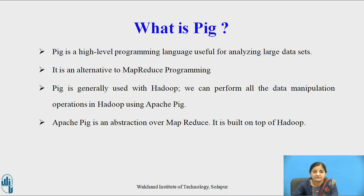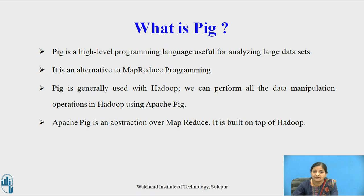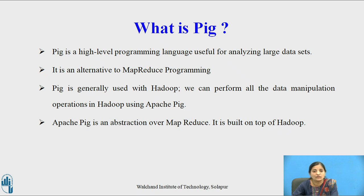What is Pig? Pig is a high-level programming language which is useful for analyzing large data sets — that is, data sets which are in the size of terabytes and petabytes. Pig is an alternative to MapReduce programming. It is generally used with Hadoop, so we can perform all the data manipulation operations in Hadoop using Apache Pig. Apache Pig works on the top of Hadoop — it is built on the top of Hadoop, and it is an abstraction over MapReduce.